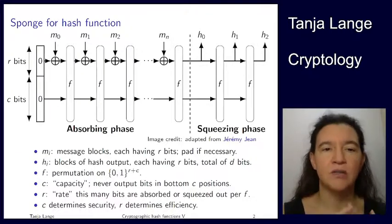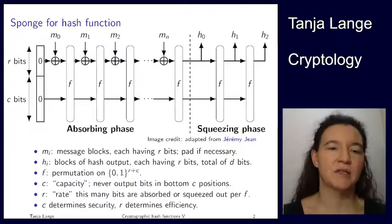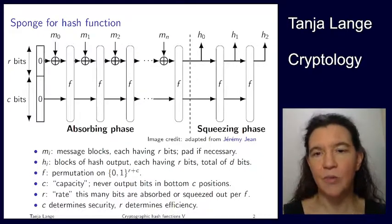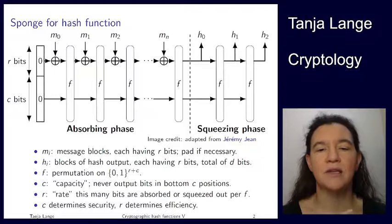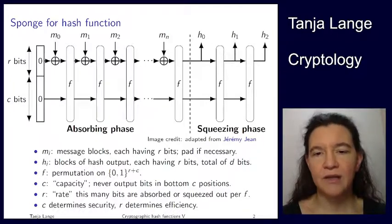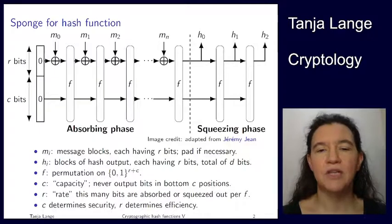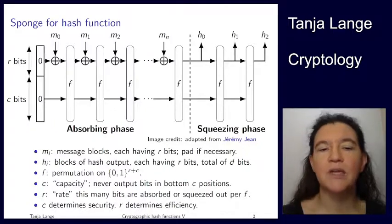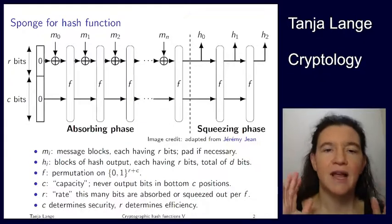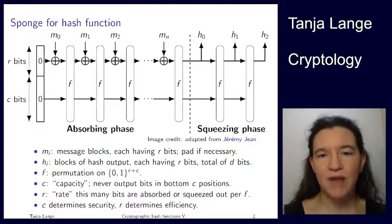Security depends on output length and capacity. The efficiency depends on how fast we input and output and also how the permutation works. If you only output two bits, it can't be collision resistant — so we need the security from the output length. And of course it's not chosen randomly because you also want it to be efficient. We also have to choose a secure permutation, so it can also mess up in that part.